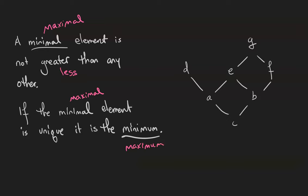In the Haase diagram shown where c is less than a and b, a is less than d and e, b is less than e and f, and e and f are both less than g, c is the minimal element and therefore it is the minimum element. The maximal elements are d and g. Notice that maximal does not mean greater than every other element. For example, d is not greater than e. Maximal means there's nothing that's greater than it. Therefore, d and g are both maximal and there is no maximum.